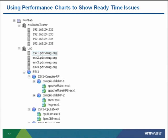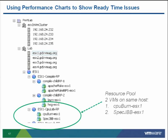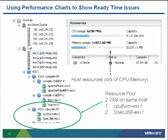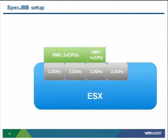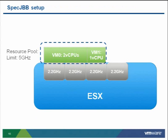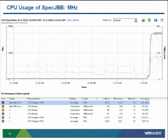Looking at some charts — I have a resource pool with two VMs on the same host: a CPU burn VM and a spec JBB benchmark VM. The host has plenty of headroom: eight 2.3 GHz processors and 48 GB of memory. The setup is a 2-vCPU VM and a 1-vCPU VM in a resource pool with a 5 GHz limit. One common source of confusion is multiple axes on these charts — CPU usage in megahertz uses one axis, while timing counters use another.